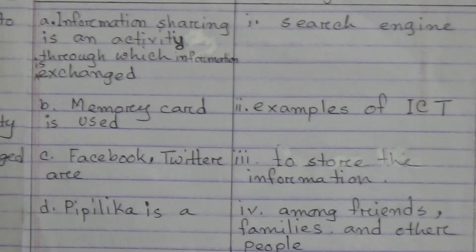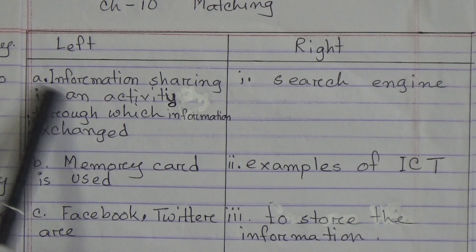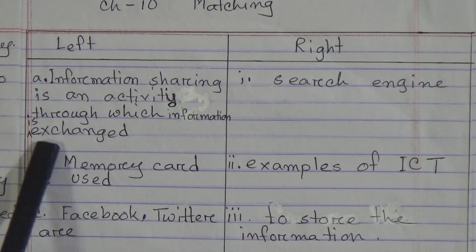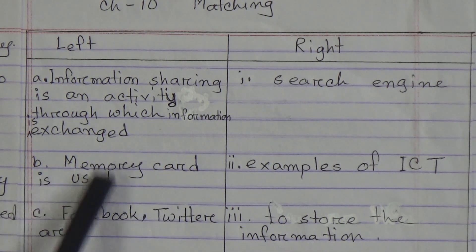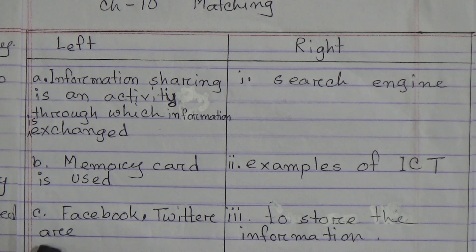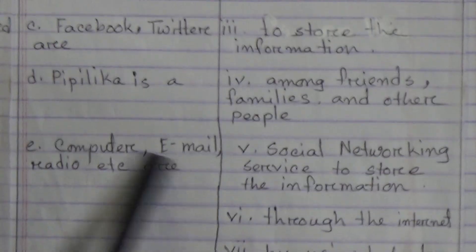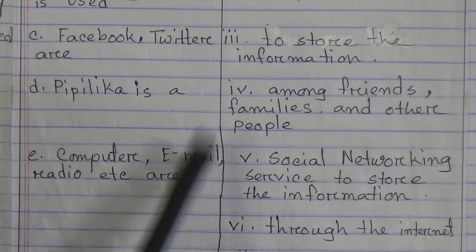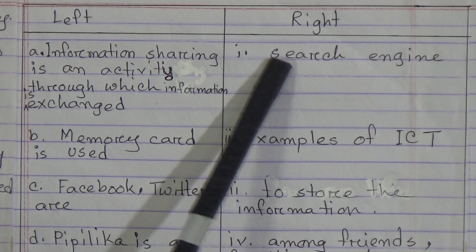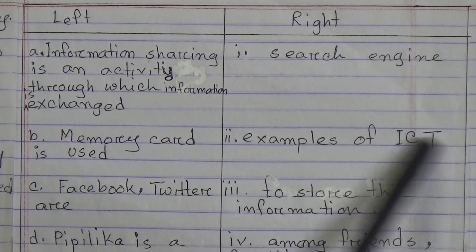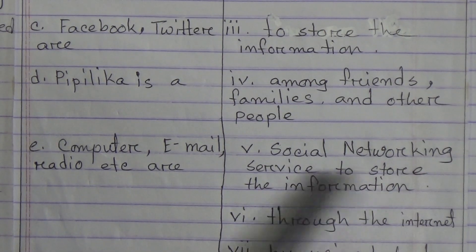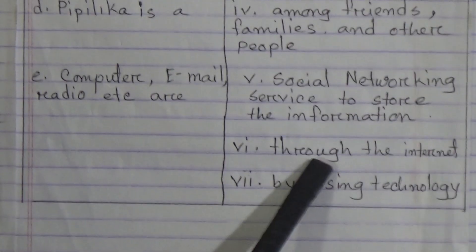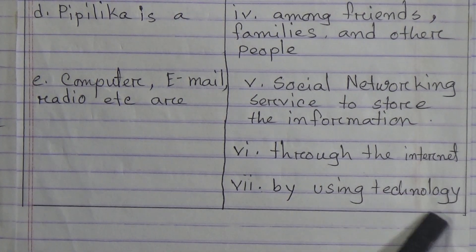Now come to the matching. On the left side: A — information sharing is an activity through which information is exchanged; B — memory card is used; C — Facebook, Twitter; D — Pipilica; E — computer, email, radio, etc. On the right side: 1 — search engine; 2 — examples of ICT; 3 — to store the information; 4 — among friends, families and other people; 5 — social networking service; 6 — through the internet; 7 — by using technology.